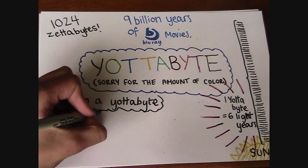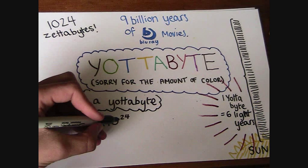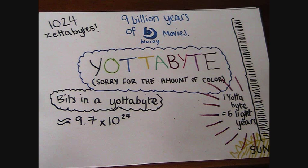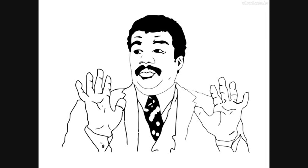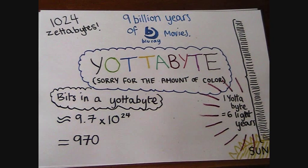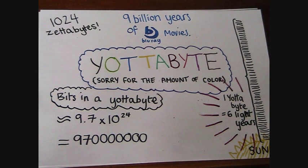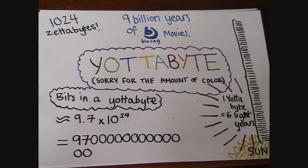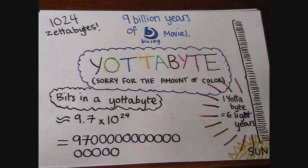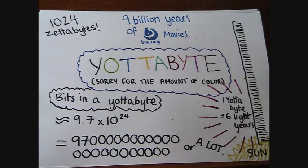So you may be asking, how many bits in a yottabyte? The answer is 9.7 times 10 to the 24th. In numbers, this is 9,700,000,000,000,000,000,000,000,000. In other words, it's a very large number.